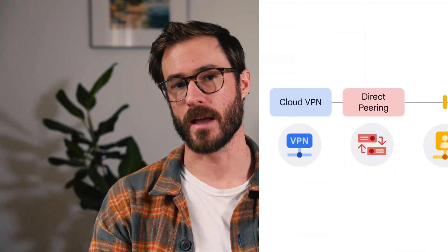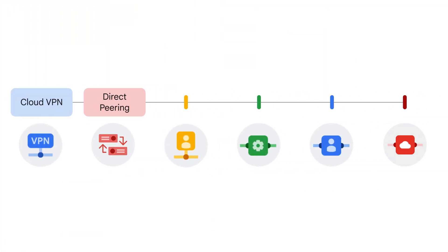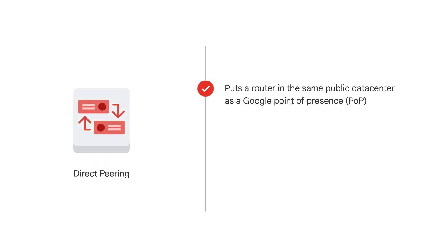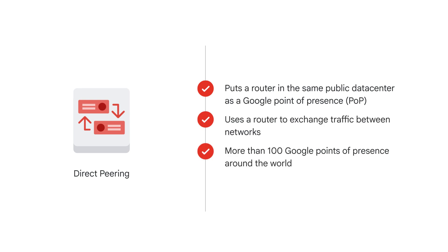But using the internet to connect networks isn't always the best option for everyone, either because of security concerns or because of bandwidth reliability. So a second option is to consider peering with Google using direct peering. Peering means putting a router in the same public data center as a Google point of presence and using it to exchange traffic between networks. Google has more than 100 points of presence around the world.